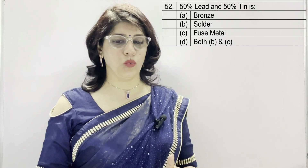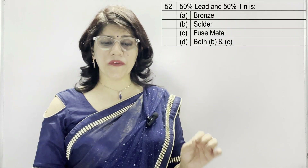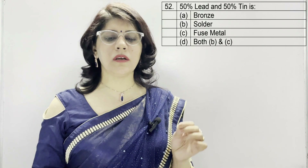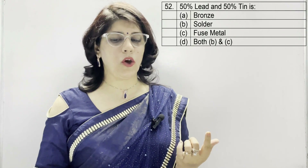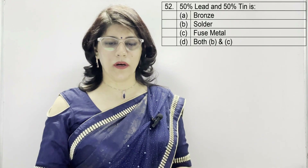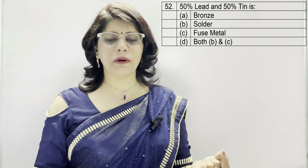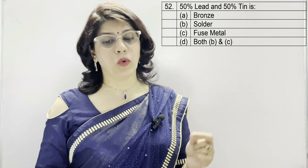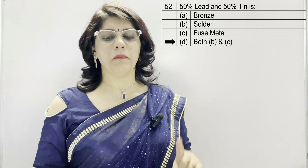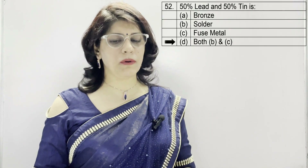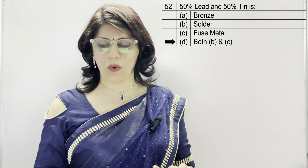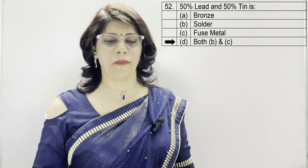In question number 52: 50% lead and 50% tin is — A: bronze, B: solder, C: fuse metal, D: both B and C. The correct option is D — both B and C — because solder and fuse metal are one and the same thing.